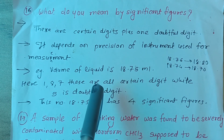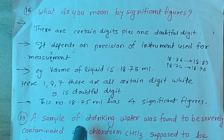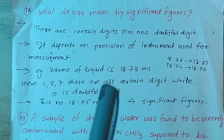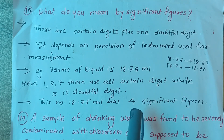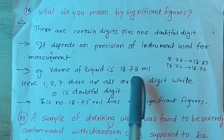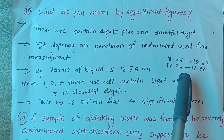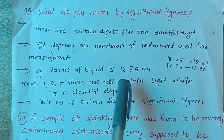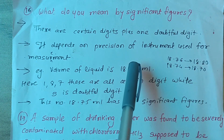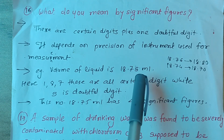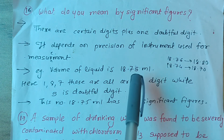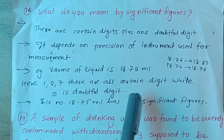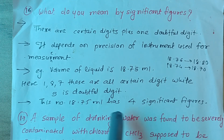Example लेते हैं: एक liquid का volume 18.75 ml है। इसमें 1, 8, और 7 ये सब certain digits हैं — बिल्कुल precise हैं। लेकिन 5 जो है वो थोड़ा doubtful है। क्योंकि 18.75 में last digit 5 की वजह से यह nearest 70 या nearest 80 हो सकता है। इसलिए 18.75 ml के चार significant figures आएंगे: 1, 8, 7, और 5।